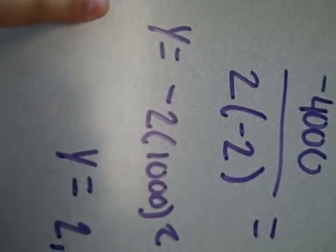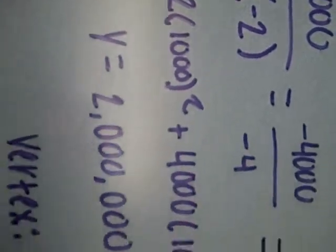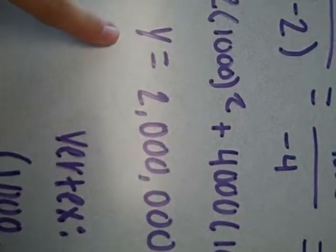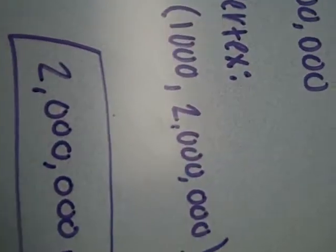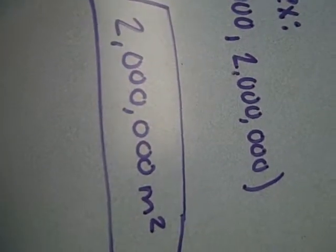And so we plugged that back into the equation and then we got Y equals 2 million. And so the vertex equals 1000 and then 2 million. And the 1000 represents the length and the 2 million represents the largest area. So the answer is 2 million.